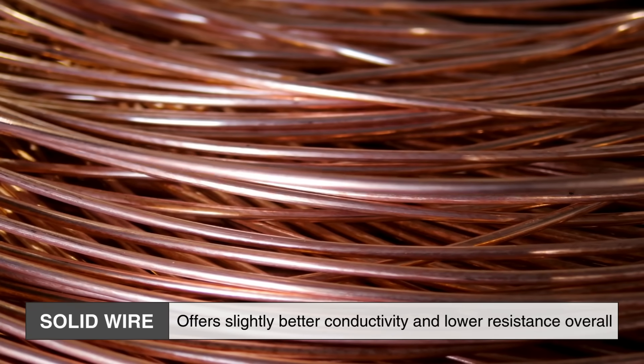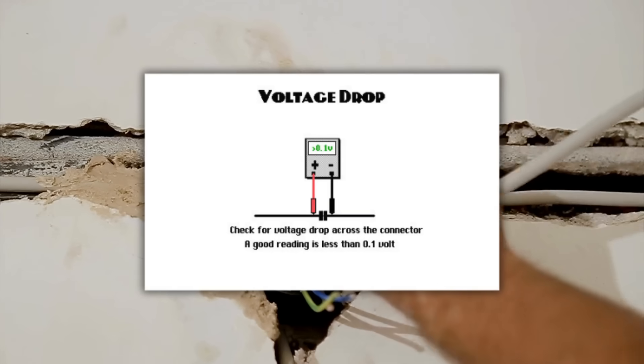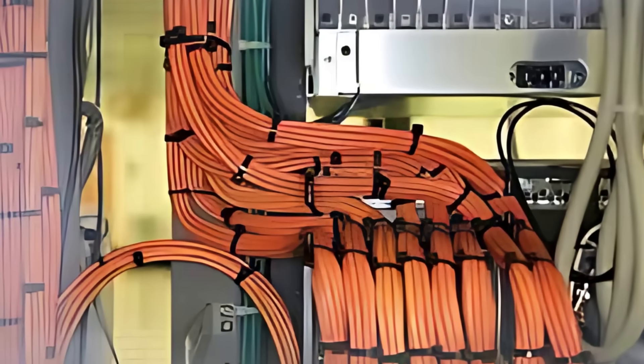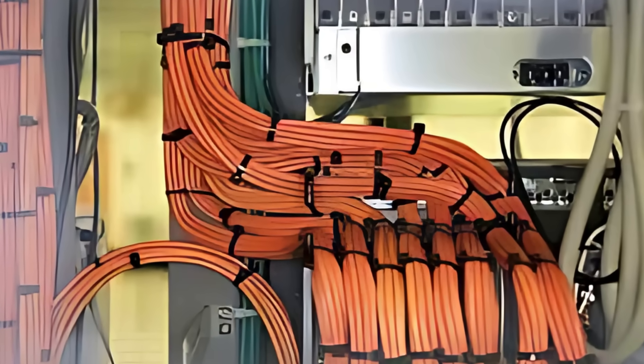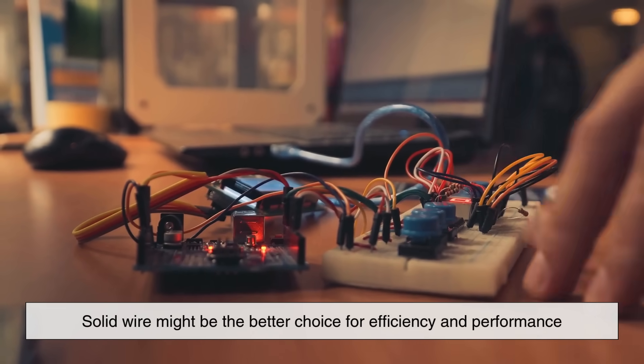Solid wire, being one continuous conductor, offers slightly better conductivity and lower resistance overall. This is especially important for long distance runs or installations where voltage drop could be a concern. If you're wiring up a circuit that's going to carry power a long way, solid wire might be the better choice for efficiency and performance.